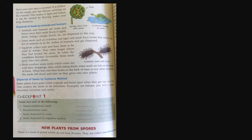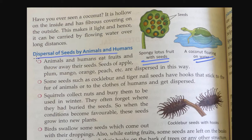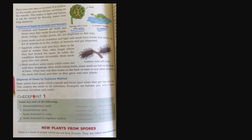Welcome back students, it's Standard 5 Science. In the previous class we learned about some of the seeds which are dispersed through water, like lotus and coconut. Continuing with the chapter, we are going forward to dispersal of seeds by animals and human beings.